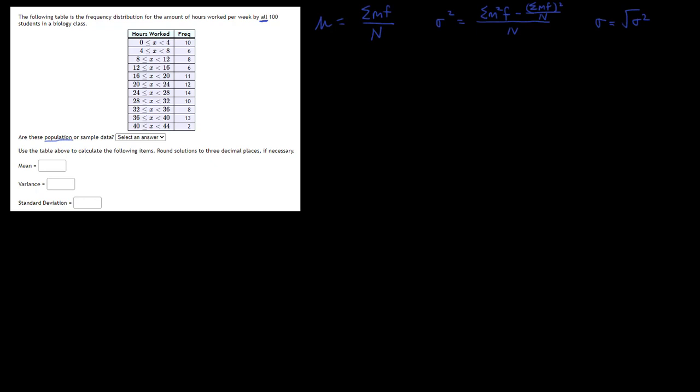So for both those calculations, we need midpoints. If you want to add another column to your chart, it's probably not a bad idea. Let's just call that the M for midpoint column. Now, how do you calculate midpoints? They're not hard. You just take your two class limits. So here, 4 and 0. You add them and divide by 2. So 0 plus 4 divided by 2 is 2. Then you do the same thing for each of your classes.